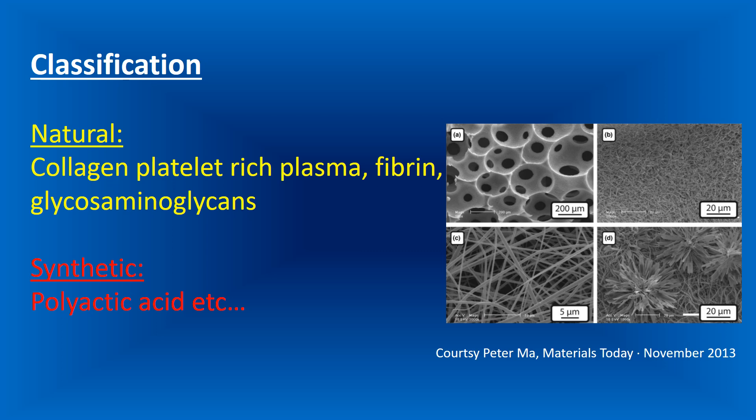Regarding classification, there are many types of scaffold. It may be natural — such as collagen, platelet-rich plasma, fibrin, and glycosaminoglycan — or it may be synthetic, such as polyacetic acid, among others.